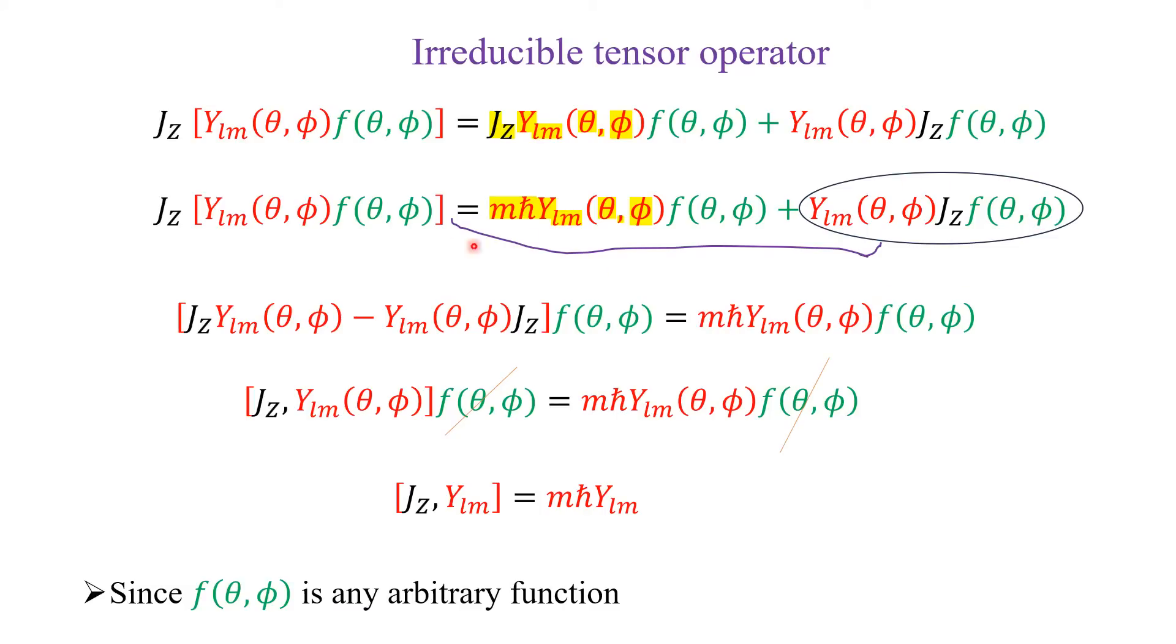Now, you bring the second term to the left-hand side. Here F(θ,φ) is there. Here also F(θ,φ). You take F(θ,φ) outside. So here, you will get J_z Y_{l,m}. And here, you have Y_{l,m} J_z.